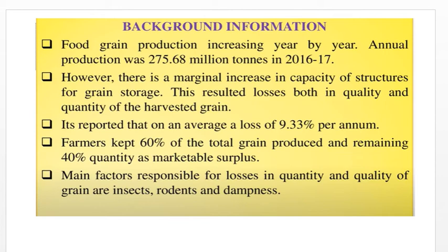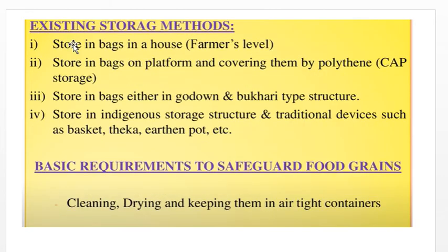The main factors responsible for losses in quality and quantity of grain are insects, rodents, and dampness. These are mainly responsible for grain losses. Coming to the next slide: existing storage methods.